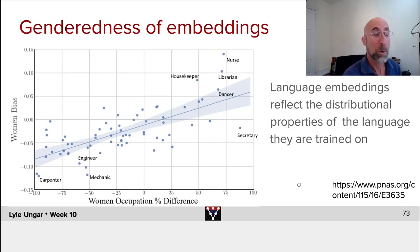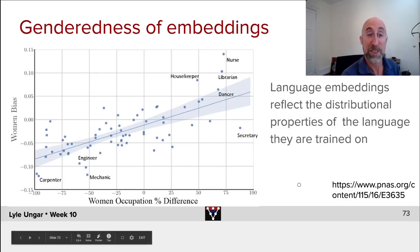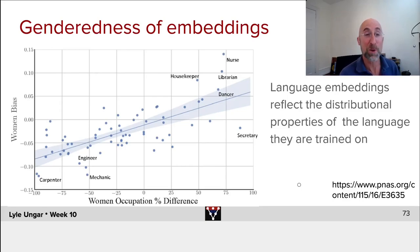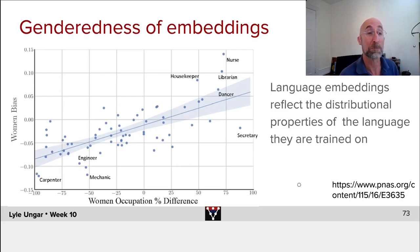The words reflect the distribution in the world because they reflect the distribution in text. And this may be something that you want in your model, or it may be something that you don't want in your model.